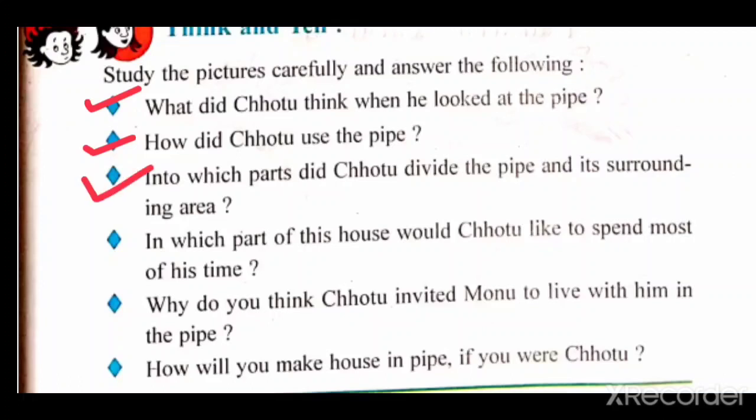In the third question: into which parts did Chotu divide the pipe and its surrounding area? Chotu divided the pipe and its surrounding area into these parts: a place for cooking, sleeping, for drying clothes, for storing water, and for guests and friends.